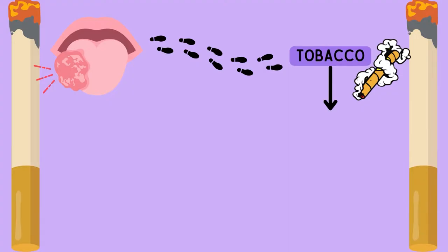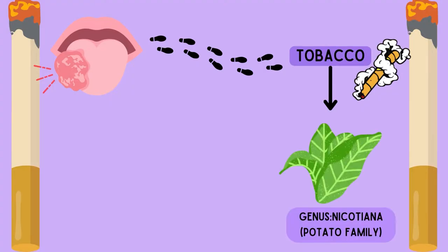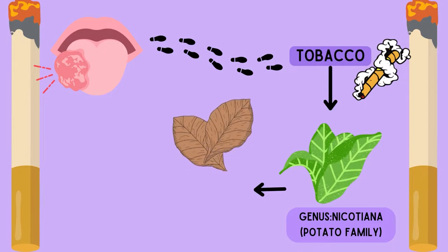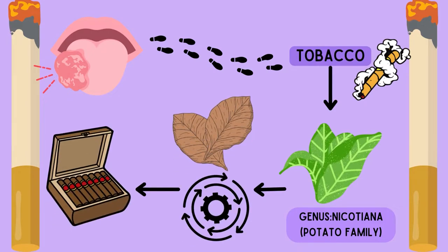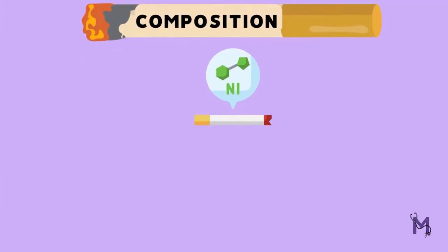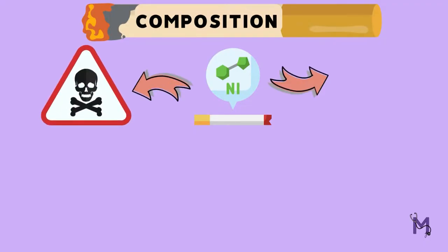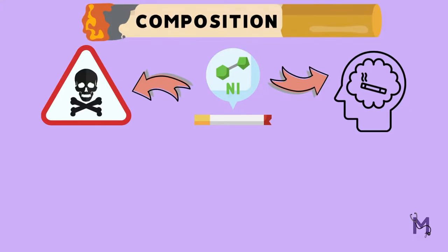Tobacco is derived from the plant species of the genus Nicotiana, which belongs to the potato family. The leaves of these plants are dried and processed for various purposes. Tobacco is mainly composed of nicotine, which is the most poisonous and addictive factor in it.